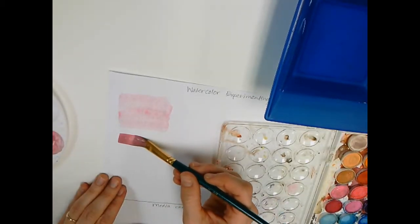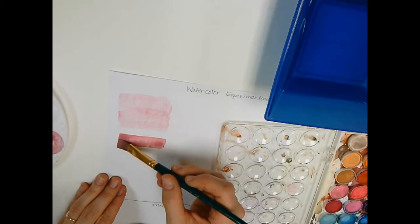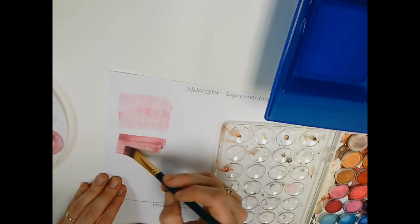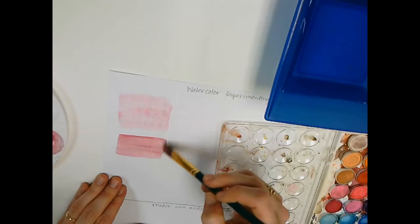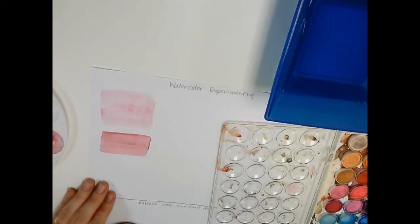If I want to do a darker wash, what happens? How do I do that? I have to load with less water. Okay? More paint. Okay? So we know that that's how this brush works. Then maybe try another brush.